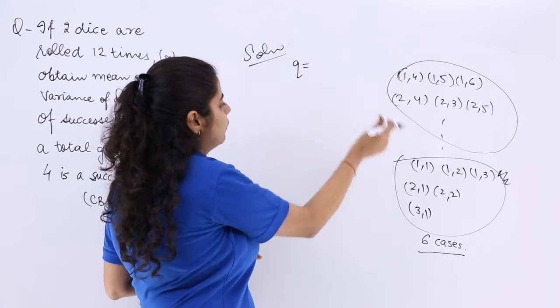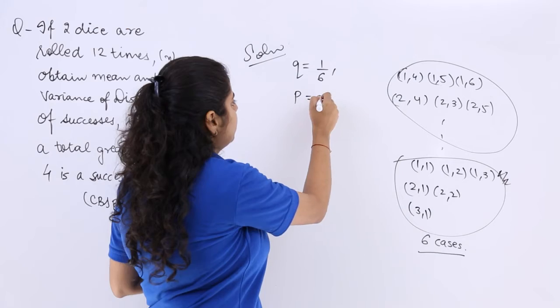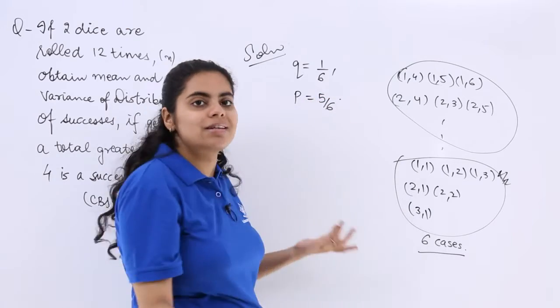The probability of failure would be these cases which will be 1 by 6, that is 6 over 36. So probability of success will be 5 by 6.